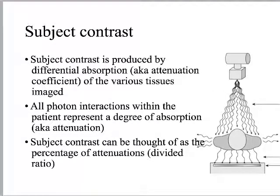So in thinking about subject contrast, this is produced by differential absorption. Quick anatomy of how this system works: we've got a remnant x-ray beam that's exiting the patient. We have the primary beam incident on the patient's skin; a portion of it is absorbed through photoelectric effect, some of it is scattered from the Compton effect in ways other than what's going to be incident on the image receptor, and that remnant amount — the ratio between what we had and what remained — we're going to call that differential absorption. That is also what can be thought of as subject contrast. And this little window right here between the patient and the image receptor is where subject contrast exists.